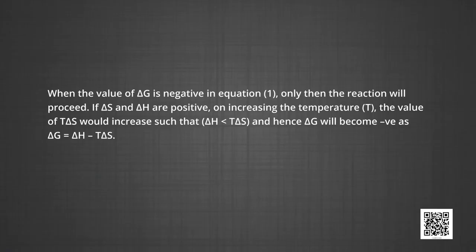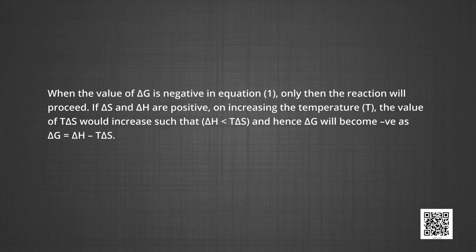A negative value of ΔG implies a positive equilibrium constant K, and this can happen only when the reaction proceeds toward products in the forward direction. From these facts, we can make the following conclusions: when ΔG is negative, the reaction will proceed. If ΔS is positive, on increasing temperature T, the value of TΔS increases such that ΔH < TΔS, and hence ΔG will become negative.